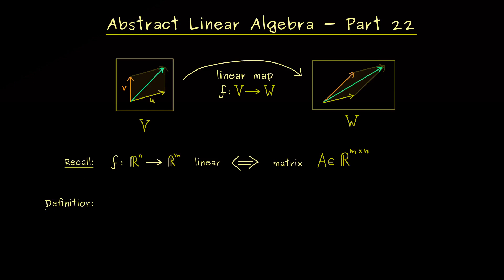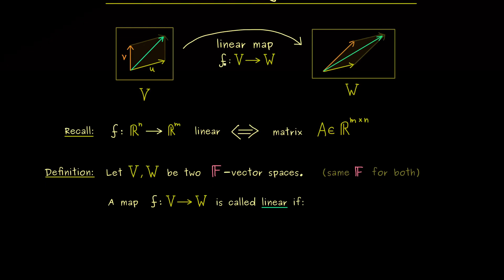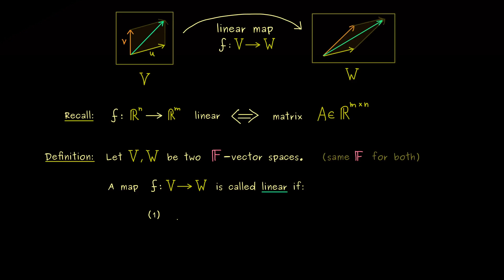First we should write down the explicit definition of a linear map. We need two general vector spaces V and W — two F-vector spaces. Usually our field F is given by the real numbers or the complex numbers. The important thing is that we choose the same F for both vector spaces, so we don't mix different fields. Then the concept of a linear map makes sense: we write that we have a map f from V to W, and any such map is called linear if it fulfills two properties — conserving addition and scaling.